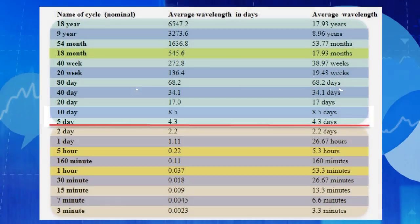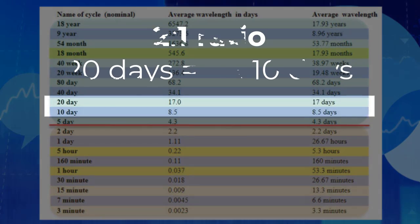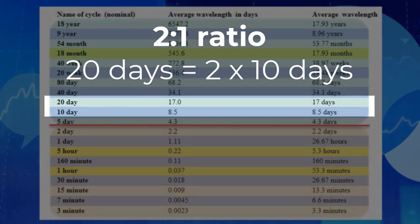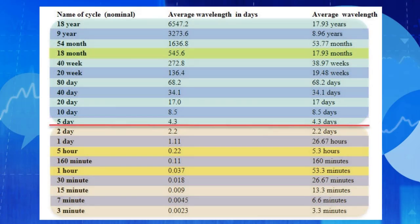And the next longer cycle, again with a mathematical relationship of 2 to 1 to the wavelength of the shorter cycle, would be the 20-day cycle, then the 40-day cycle, the 80-day cycle, and so forth. We will be coming back to this nominal model several times in the videos ahead and speaking about that mathematical relationship.